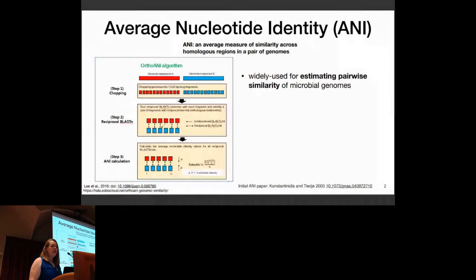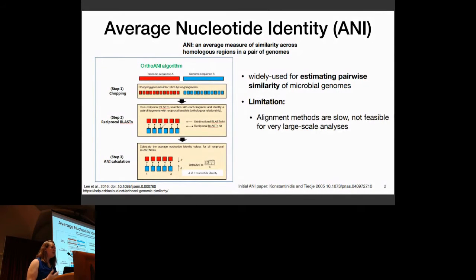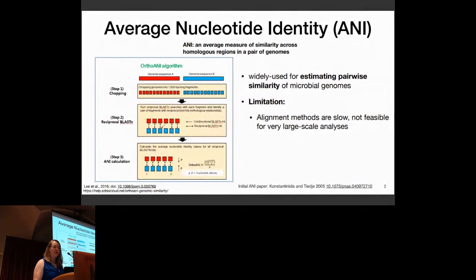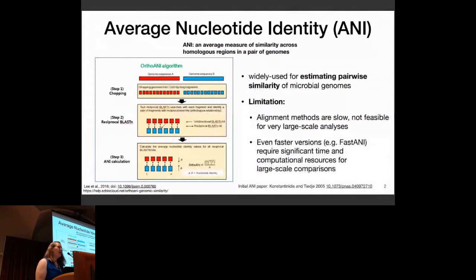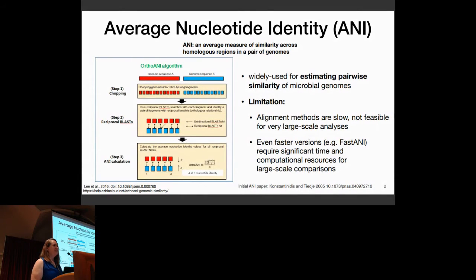It is currently really widely used, especially now that we have so much genome information for estimating pairwise similarity. But in my opinion, it has one major limitation: any alignment-based method is going to be pretty slow and not really scalable for the 10,000 or 100,000 comparison scale. And even faster versions like Fast ANI, which uses mash map to find homologous regions, are still challenged by the 10,000 to 100,000 comparison range.